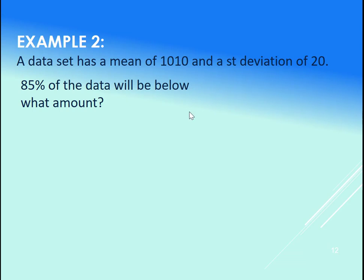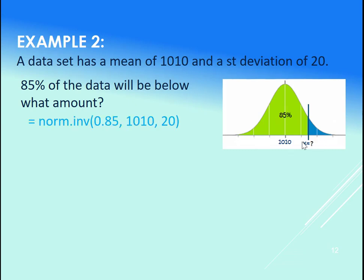85% of the data will be below what amount. So let's look and see what that would look like. So here's our 85%. We want that x value, use the norm.inv, put in the 0.85 for our area here, 1,010, and 20.